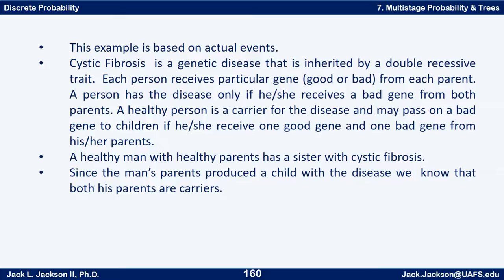Each person receives a particular gene — either good or bad — from each parent. A person has the disease if and only if they receive the bad gene from both parents. A healthy person is a carrier for the disease and may pass on a bad gene to children if they received one good gene and one bad gene from their parents. They don't have the disease but they still have that faulty gene to pass on.